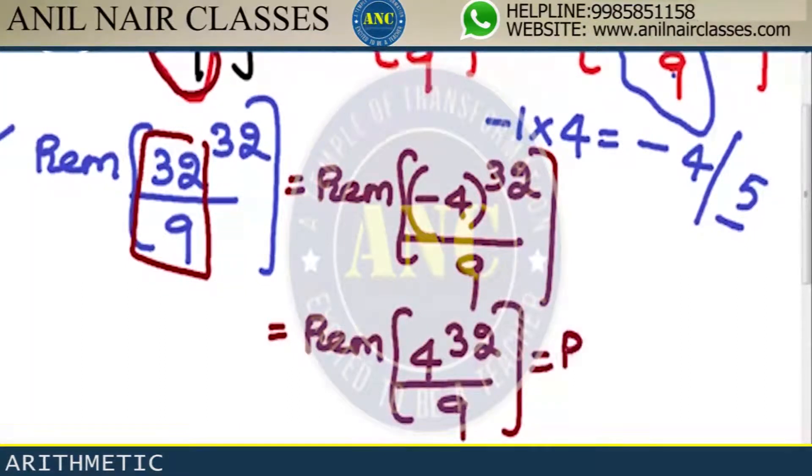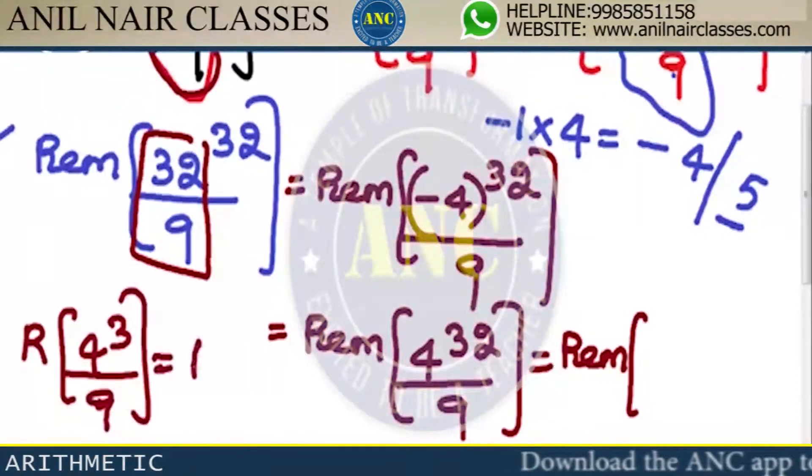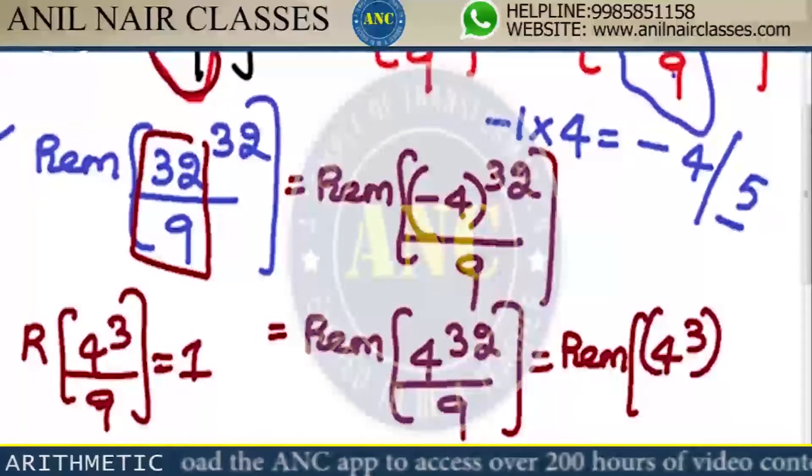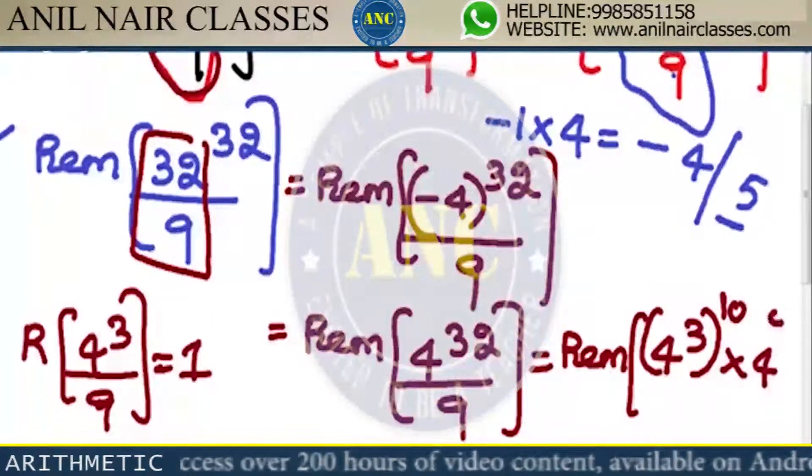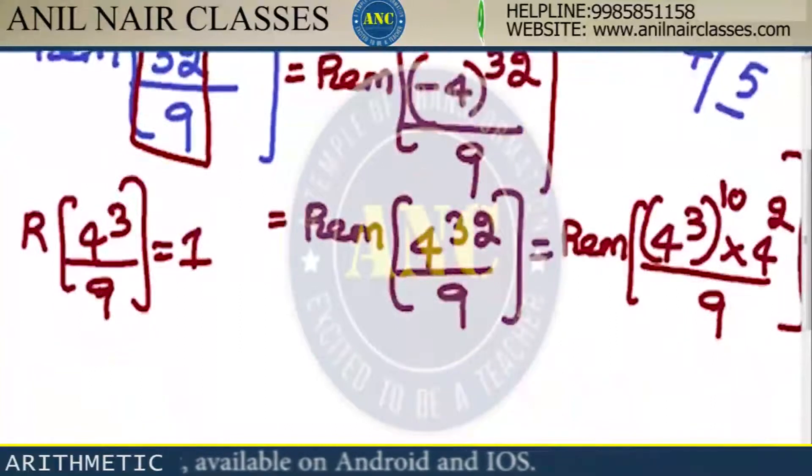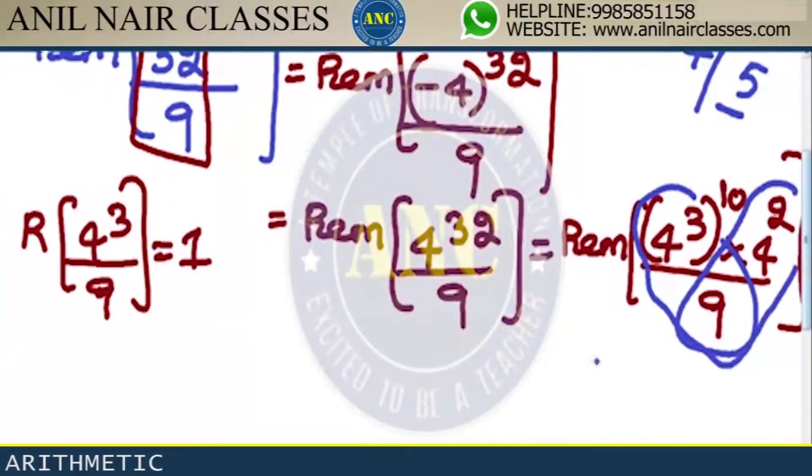Which power of 4 when divided by 9 will get 1? 4 cube divided by 9 - 64 divided by 9 is 1. So this will be 4 cube power 10 into 4 square divided by 9. 4 cube is 64, 64 divided by 9 - 9 sevens are 63, that's 1. 16 divided by 9 - 9 ones are 9, remainder is 7. Remainder is 7.